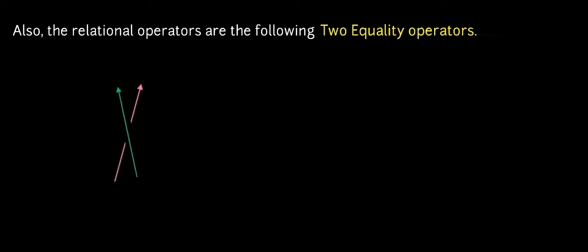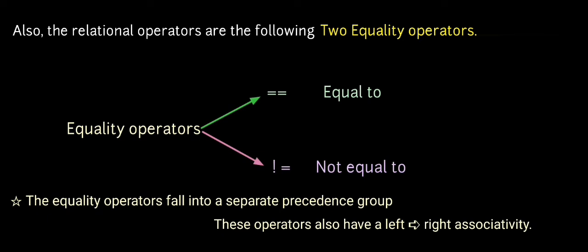The relational operators are followed by two equality operators: equal to and not equal to. The equality operators fall into a separate precedence group in C language. These operators also have left to right associativity.